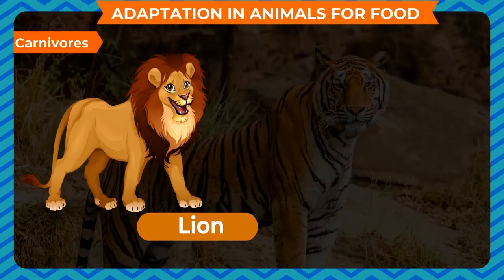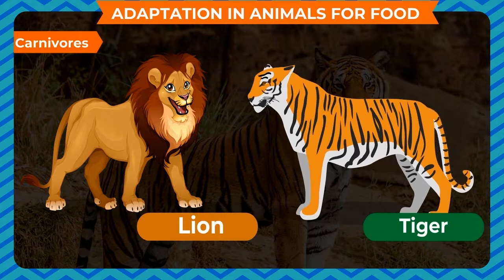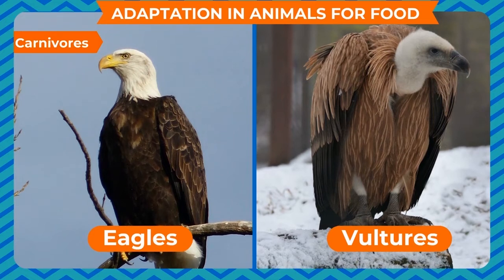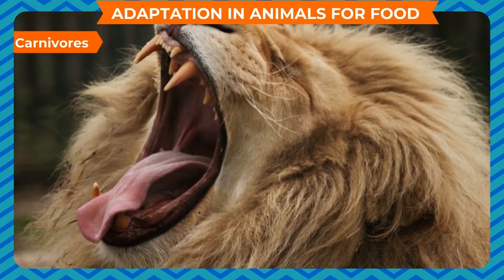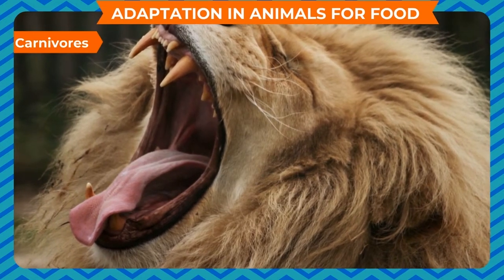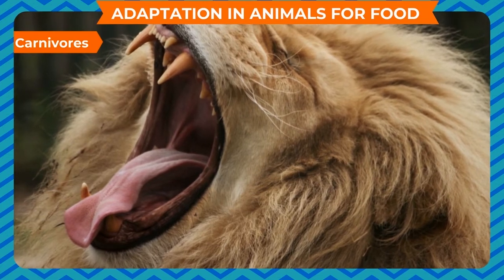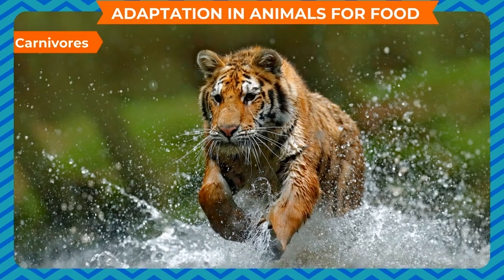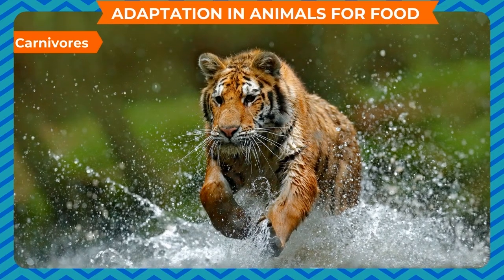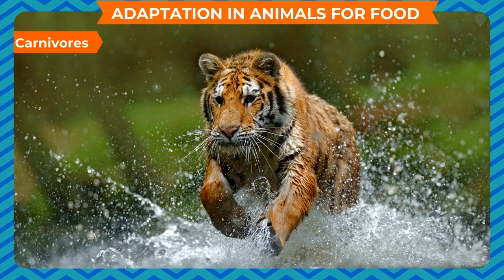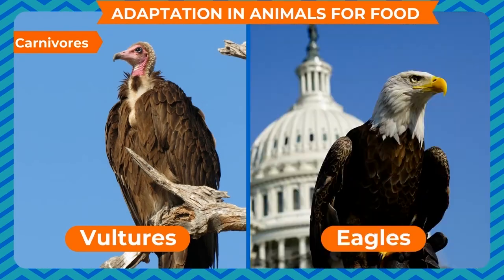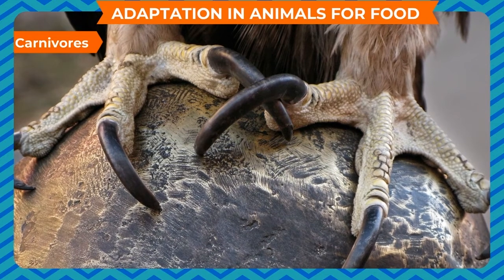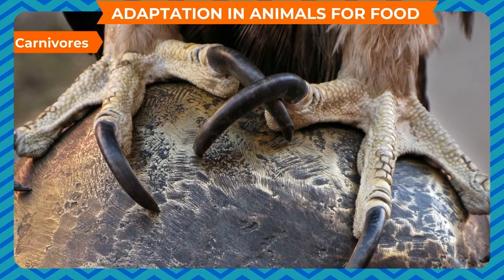Carnivores such as lions, tigers, eagles, vultures, etc. eat flesh. Most carnivores have long, sharp pointed teeth and strong claws to tear the flesh. Their strong legs help them to run fast to catch their prey. Birds such as vultures and eagles have sharp claws and hooked beaks to catch the prey and tear its flesh.